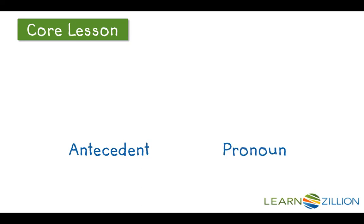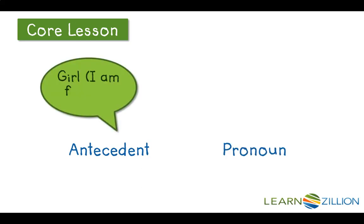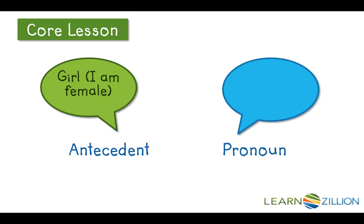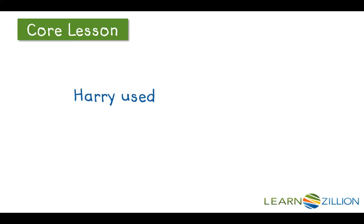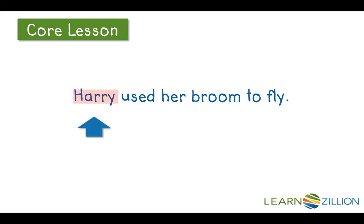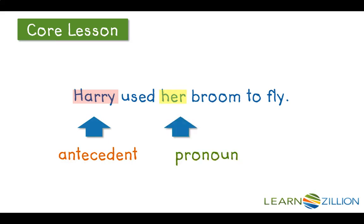Antecedents and pronouns need to agree in terms of gender. If the antecedent is a girl, which is female, then the pronoun needs to be female — so the pronoun could be 'her.' Our antecedent in this sentence is Harry, and our pronoun is 'her.' Harry is a boy and the pronoun 'her' is for a girl, so in order for them to agree, we have to change 'her' to 'his.' The correct sentence is: 'Harry used his broom to fly.'